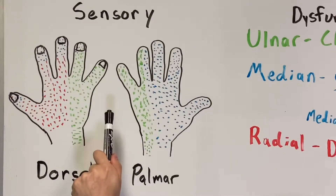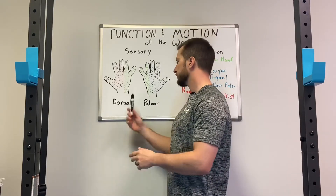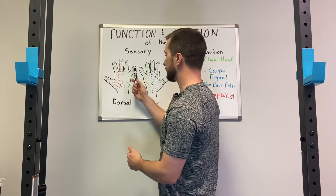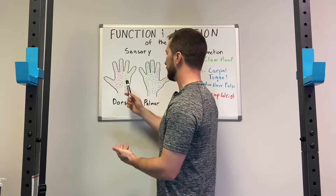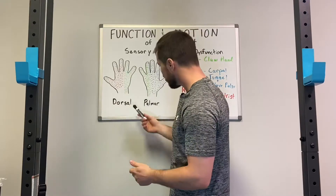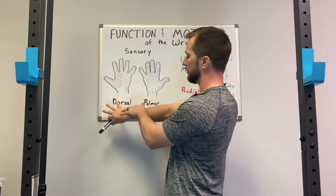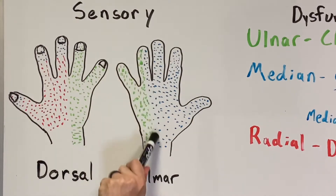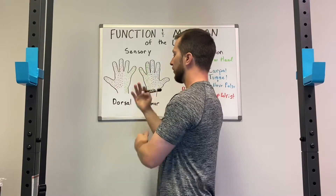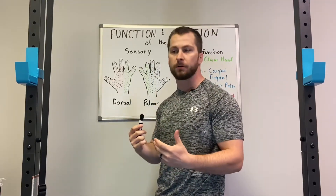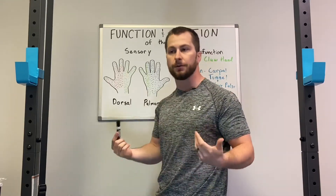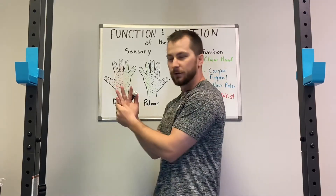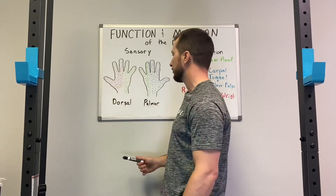Looking at the sensory distributions of our nerves: starting with the ulnar nerve, shown here in green, the dorsal or back of the hand has the ulnar nerve supplying the two most medial fingers — the pinky and ring finger. On the front of the hand the distribution is similar, though it cuts off in the middle of the ring finger. This is really apparent when you hit your funny bone — you get pins and needles going down into just that pinky and ring finger, because that's your ulnar nerve's distribution.